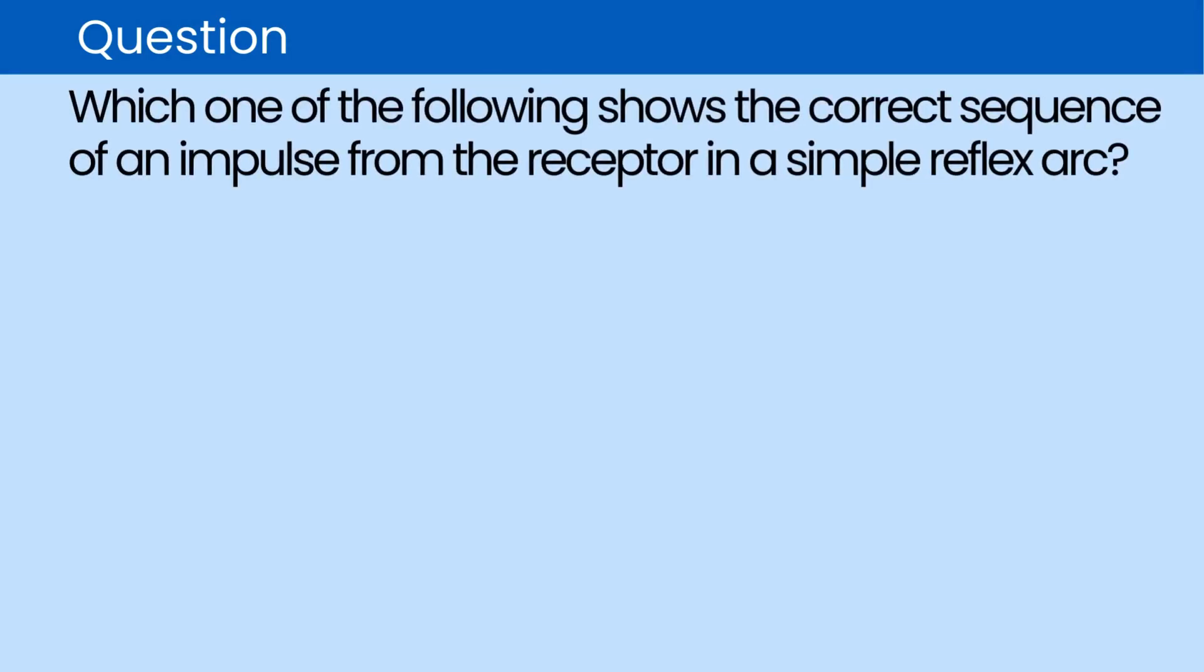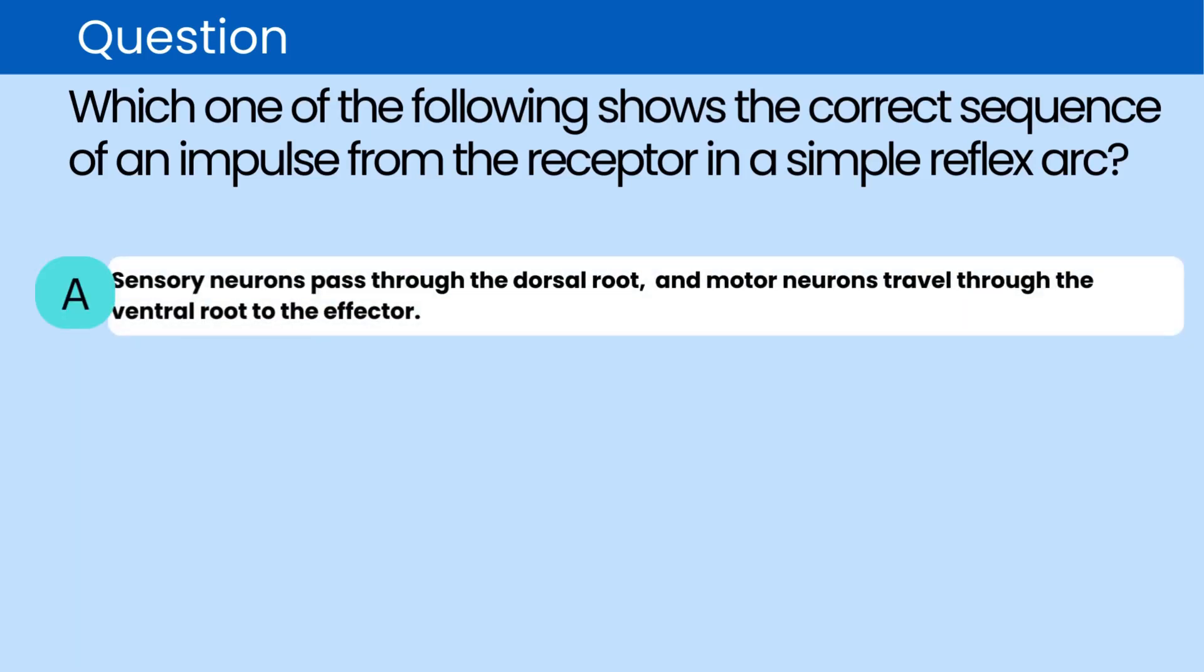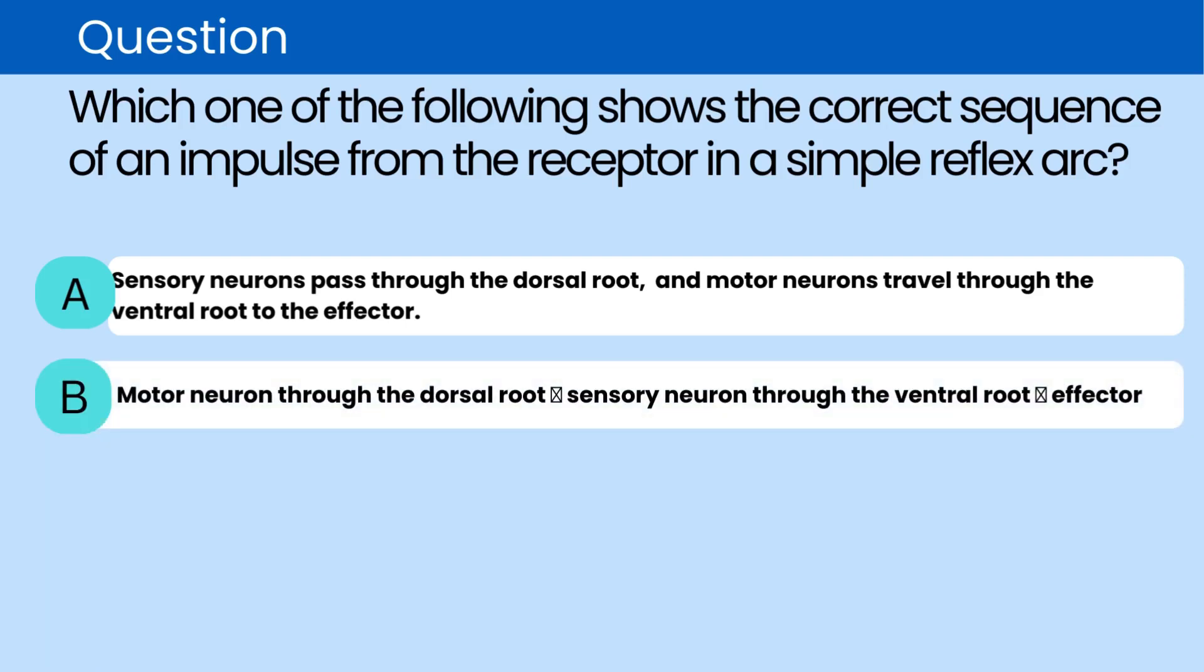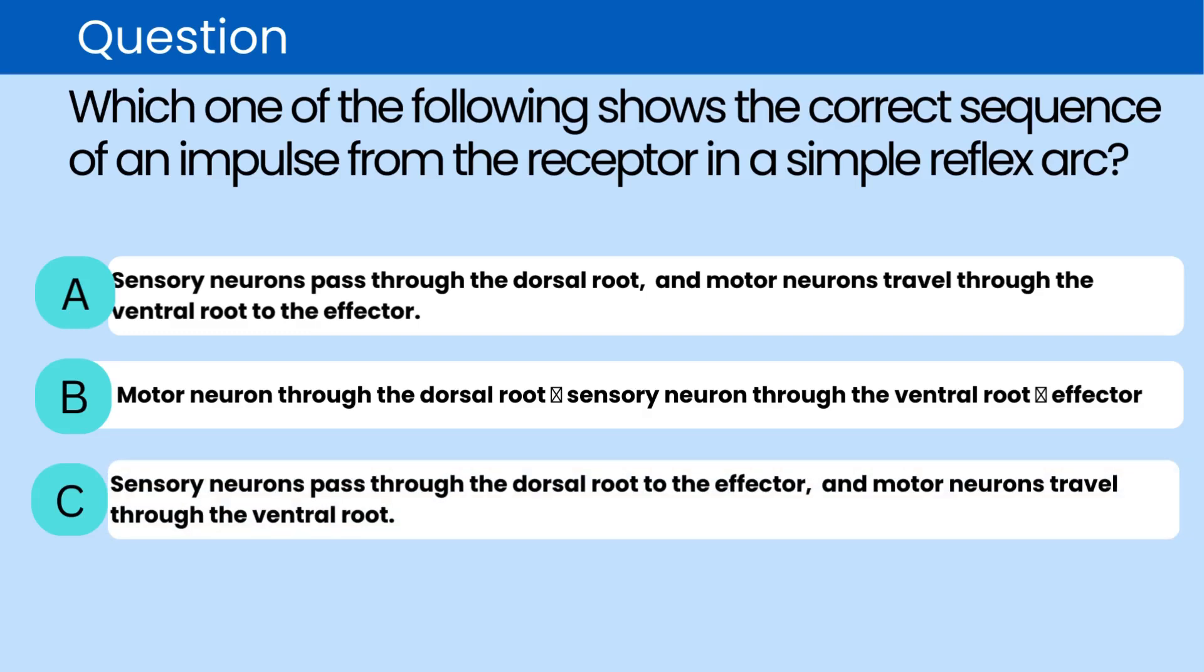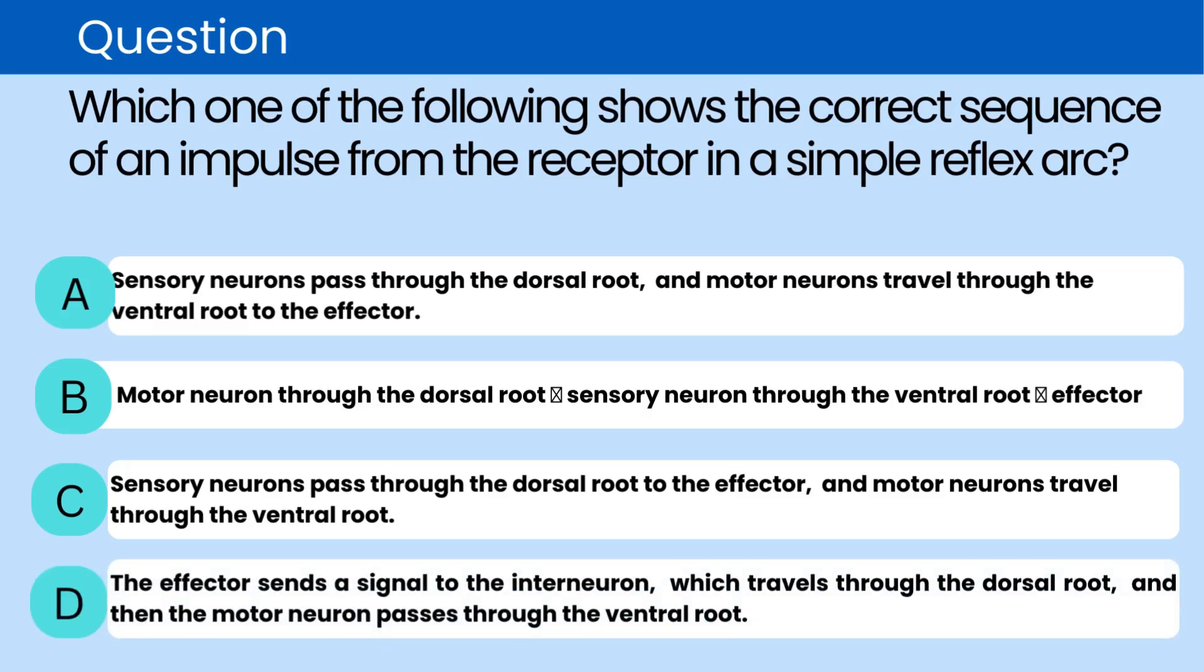Question. Which one of the following shows the correct sequence of an impulse from the receptor in a simple reflex arc? A. Sensory neurons pass through the dorsal root and motor neurons travel through the ventral root to the effector. B. Motor neurons pass through the dorsal root and sensory neurons travel through the ventral root to the effector. C. Sensory neurons pass through the dorsal root to the effector and motor neurons travel through the ventral root. D. The effector sends a signal to the interneuron which travels through the dorsal root and then the motor neuron passes through the ventral root.